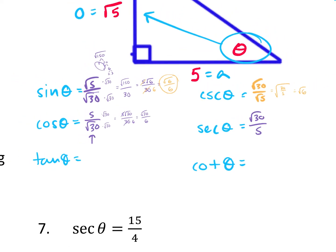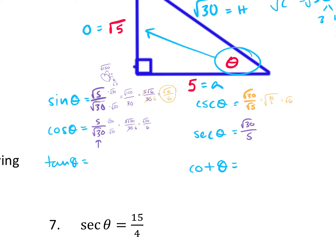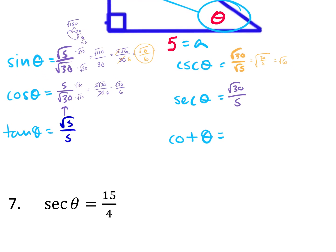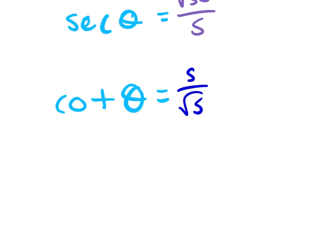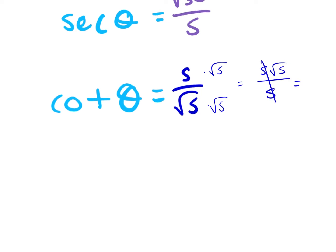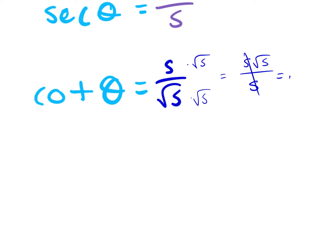Tangent is opposite over adjacent, so √5 over 5. For cotangent, I flip it — 5 over √5 — and then rationalize. Multiply the top and bottom by √5. We get 5√5 over 5, and the 5s cancel, so it's just √5.